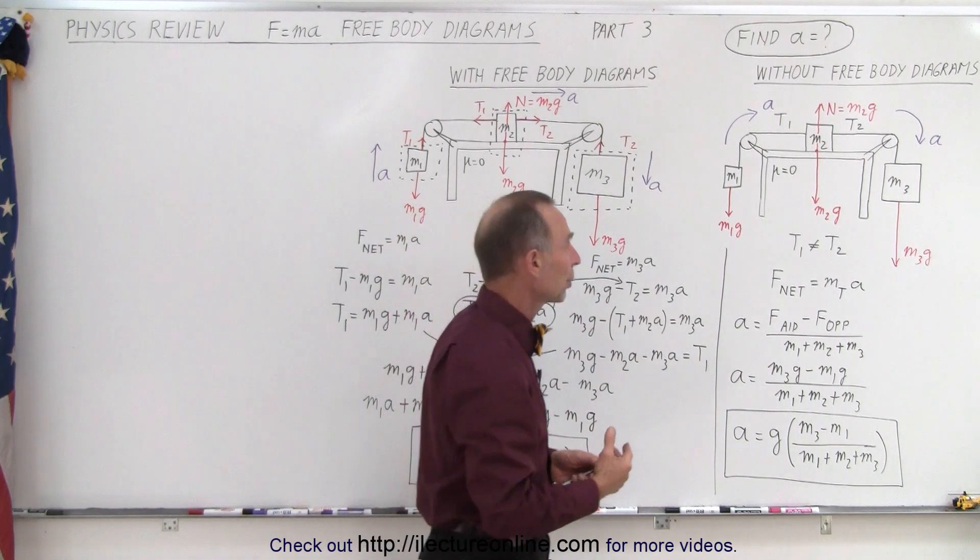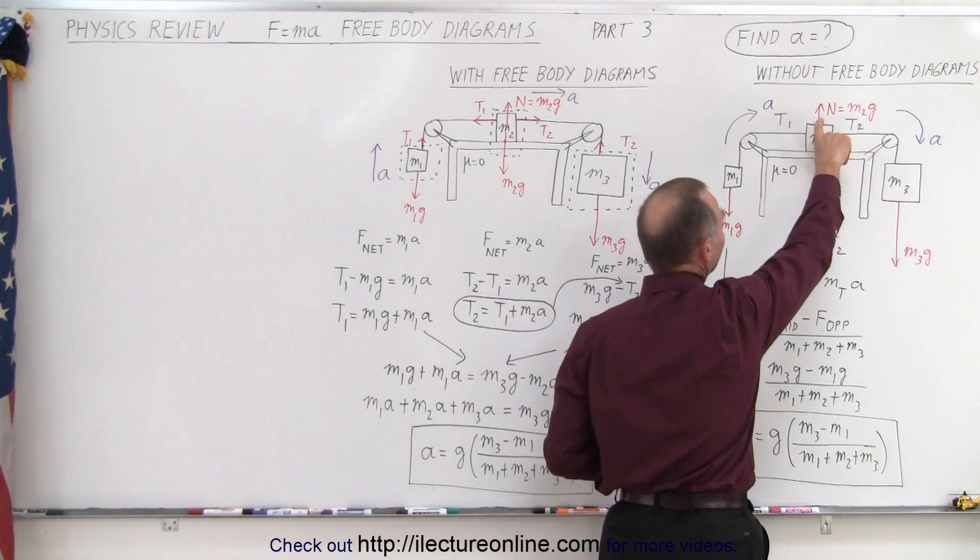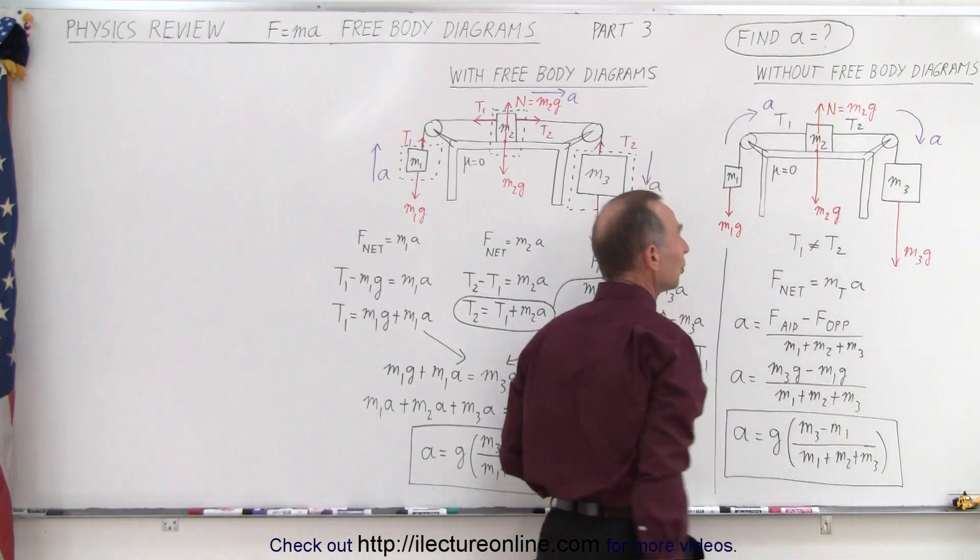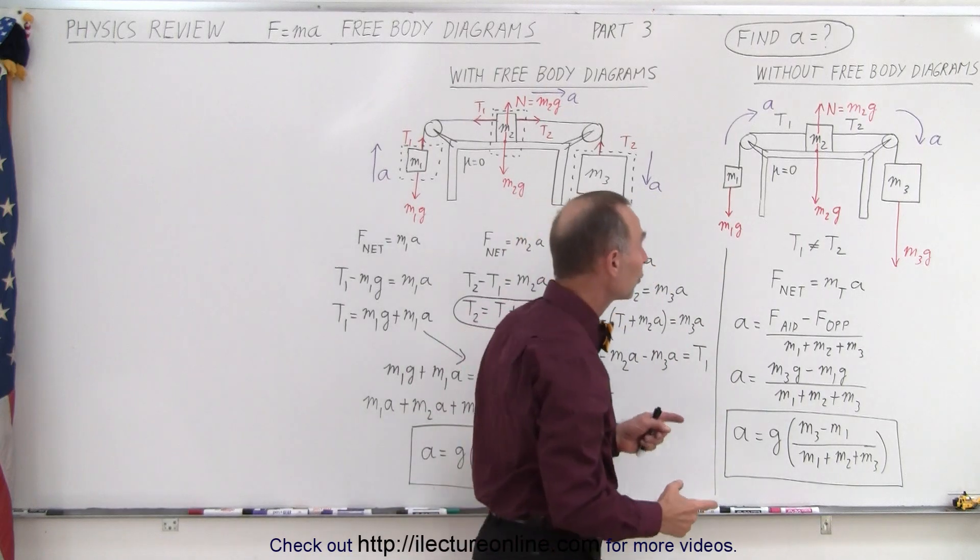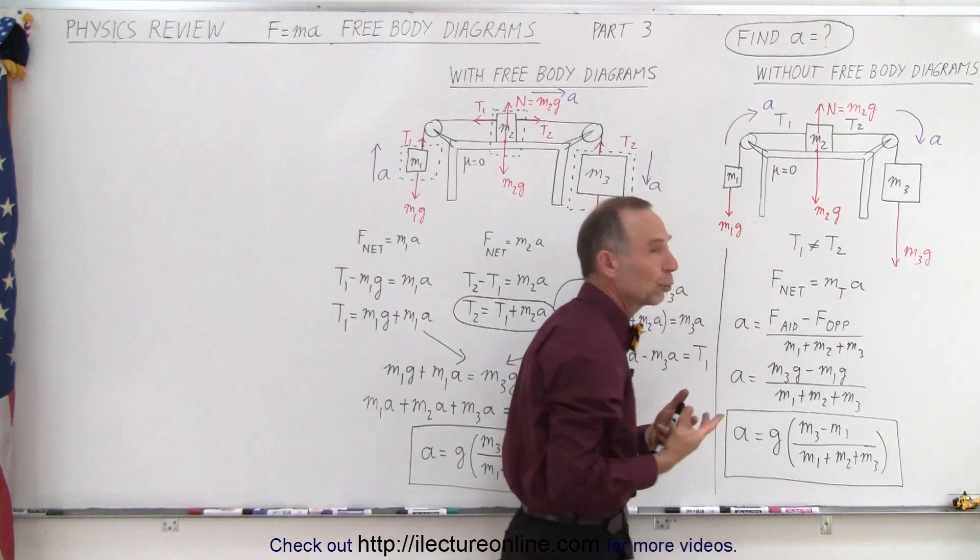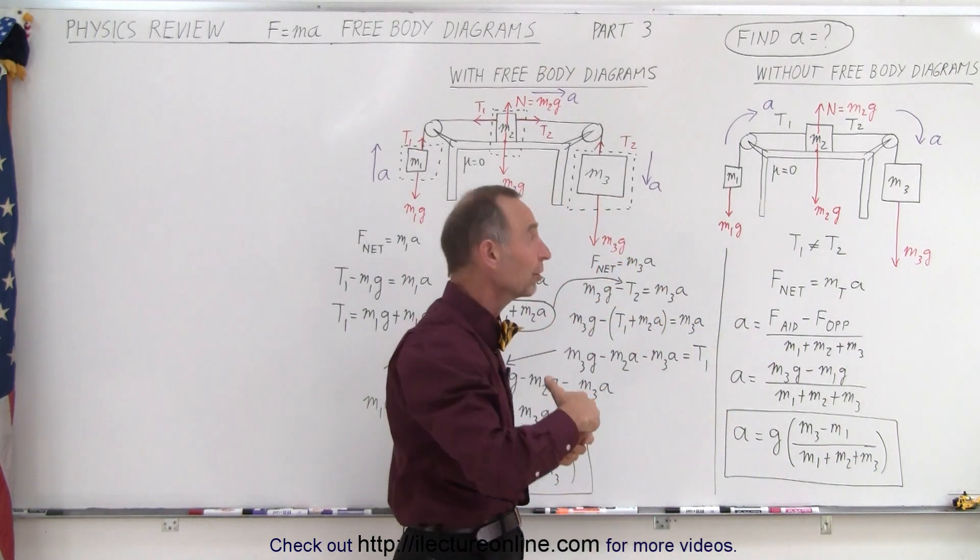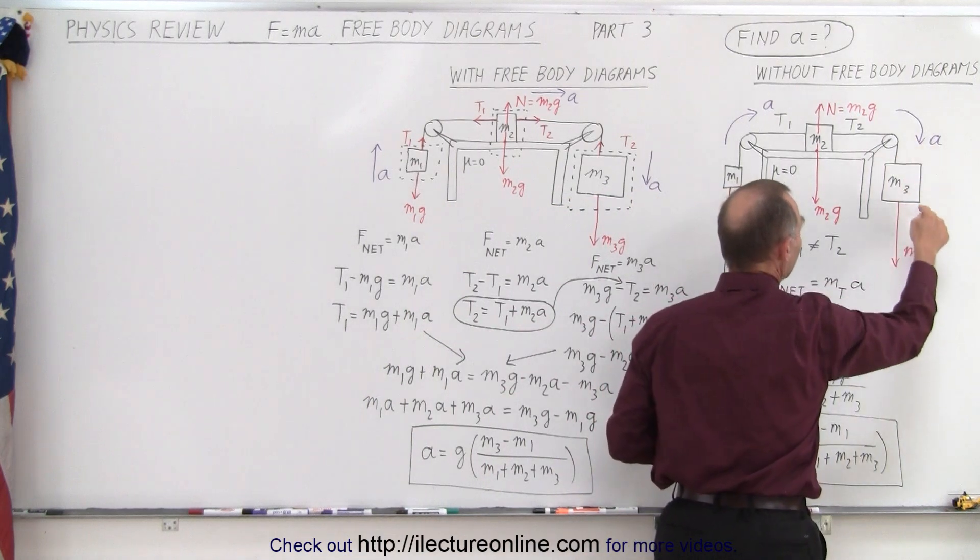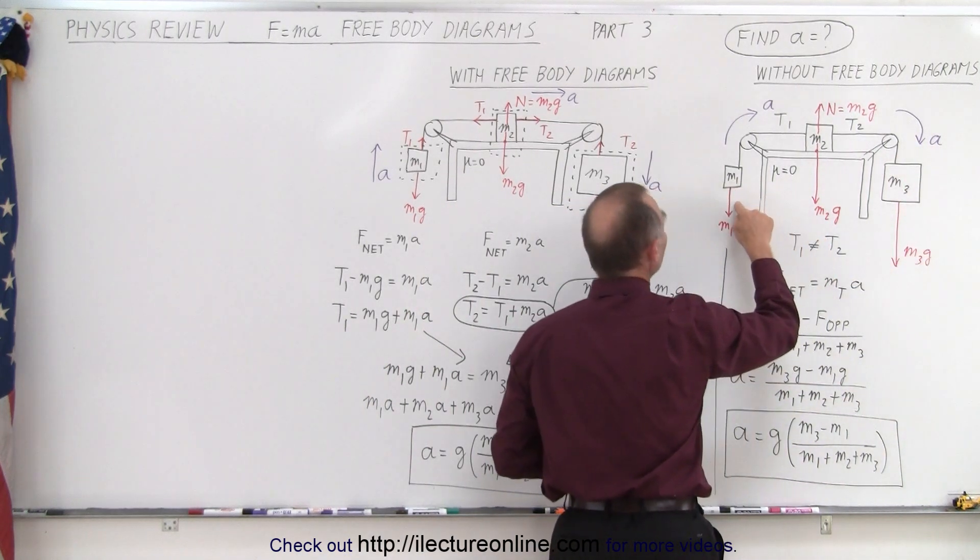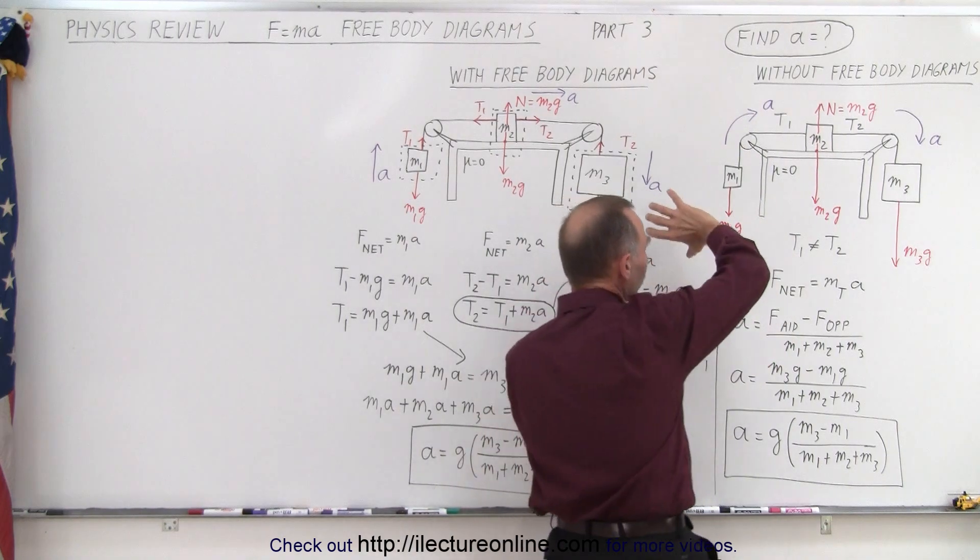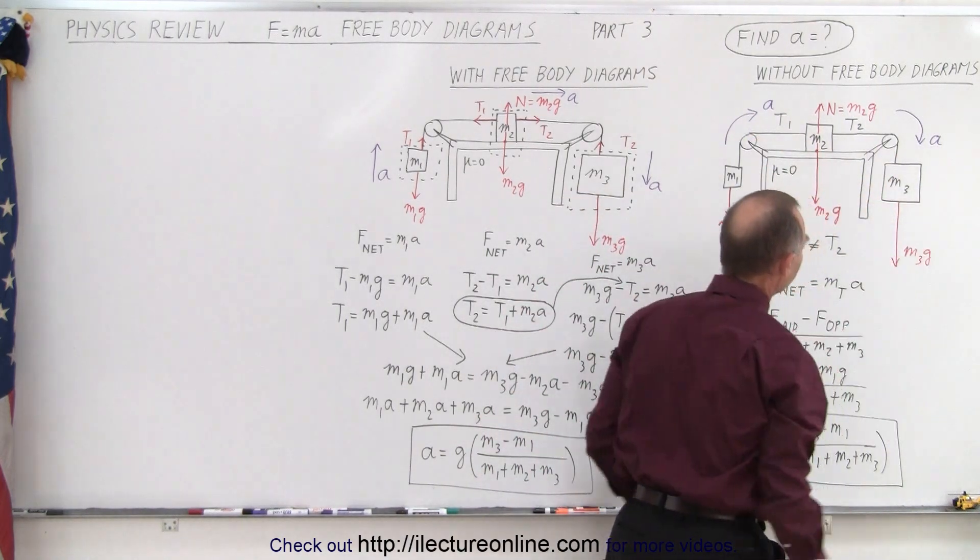The only forces we have to worry about are these four, but these two cancel each other out. The force of gravity acting downward is canceled out by the normal force of the table pushing back. So the only forces left are these two forces, and then you have to determine which is the aiding force and which is the opposing force. The aiding force is the one in the same direction as acceleration, which is M3G. The opposing force is the one in the opposite direction from the acceleration. Notice the whole system accelerates in a clockwise direction.